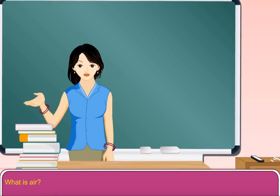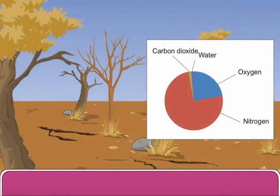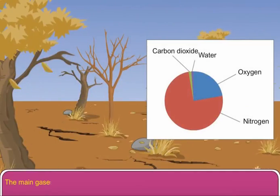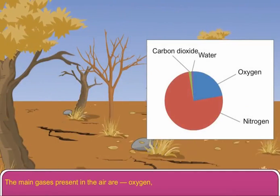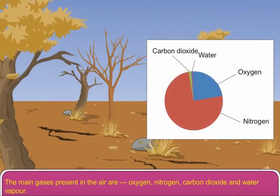What is air? Air is a mixture of various gases. The main gases present in the air are oxygen, nitrogen, carbon dioxide and water vapor.